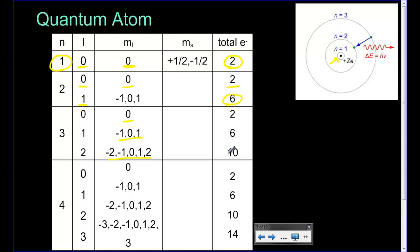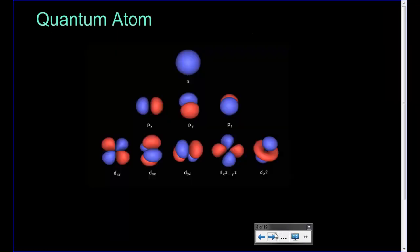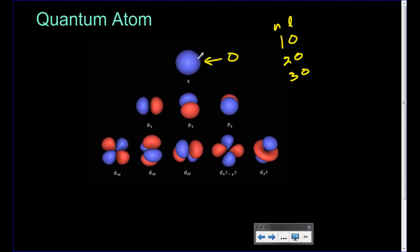Bohr came up with this idea of quantizing — giving a description for the location of an electron. What this leads to is understanding what those orbitals start to look like. A zero orbital, whether it's a one-zero, two-zero, or three-zero orbital — meaning N is one, two, or three but the L value is zero — that is a zero subshell and also a zero orbital.